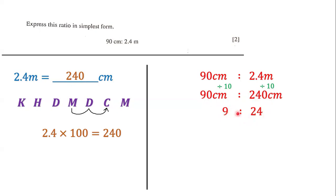Well, we can use 3. So 9 divided by 3 and 24 divided by 3. 9 divided by 3 is 3, and 24 divided by 3 is 8. And so this is the answer in its simplest form.